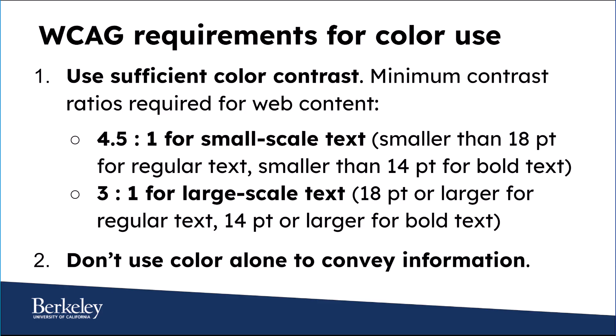As you may have heard, by June of 2024, Berkeley websites must comply with the success criteria in WCAG 2.0 AA. So let's talk about what WCAG requires for color usage. First, your text must meet the minimum color contrast ratios. For small text, the ratio must be 4.5 to 1 or greater. Small text is defined as smaller than 18 points for regular text and smaller than 14 points for bold. For large text, the ratio must be 3 to 1 or greater. Large text is defined as 18 points or larger, or 14 points or larger if bold. Second, you must not use color alone to convey information. You may use color, but you should also use patterns or labels so that people who can't see color can still understand your content.